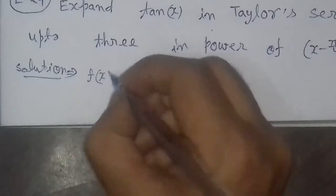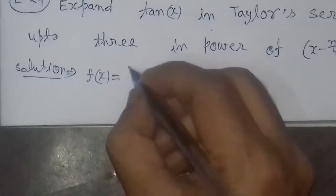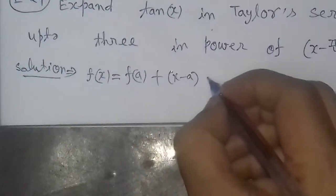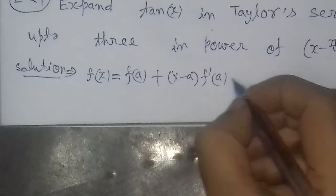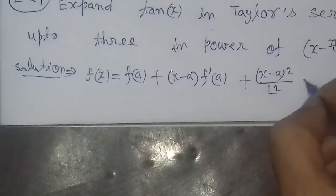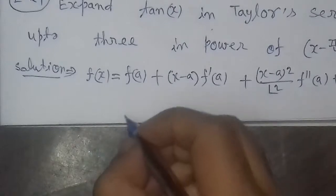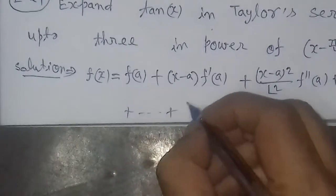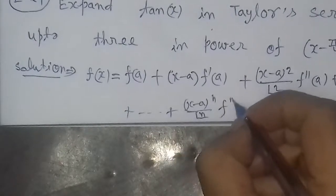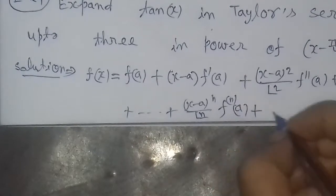The Taylor series expansion of a function f(x) about the point a is: f(a) plus (x minus a) times f'(a) plus (x minus a)² upon factorial 2 times f''(a), plus ... up to (x minus a)^n upon factorial n times the nth derivative of f at a, and so on.